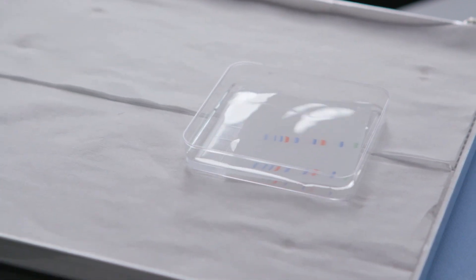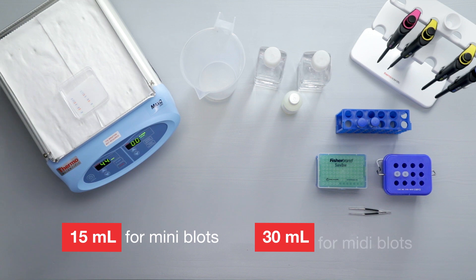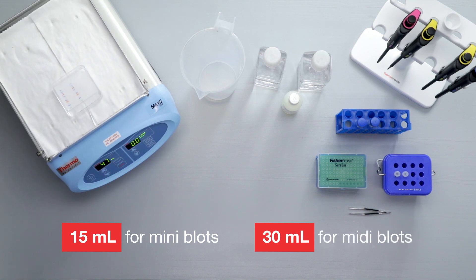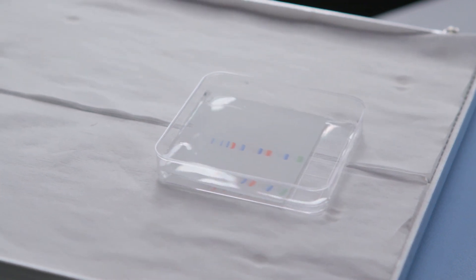For typical incubation trays, use at least 15 milliliters for mini-blots and 30 milliliters for midi-blots to fully cover the membrane. Avoid low volumes, as differences in agitation and coverage can produce high or uneven background.